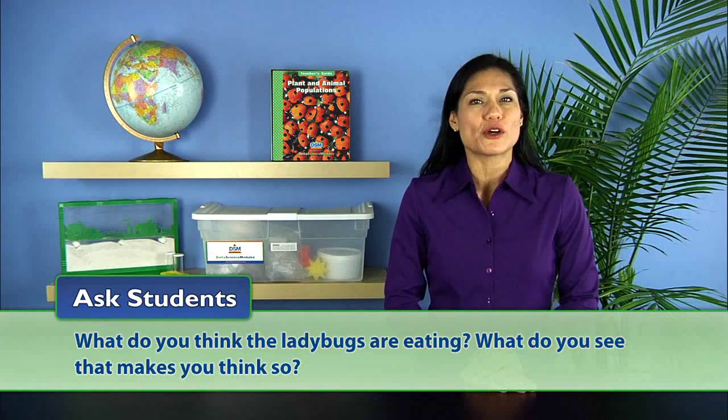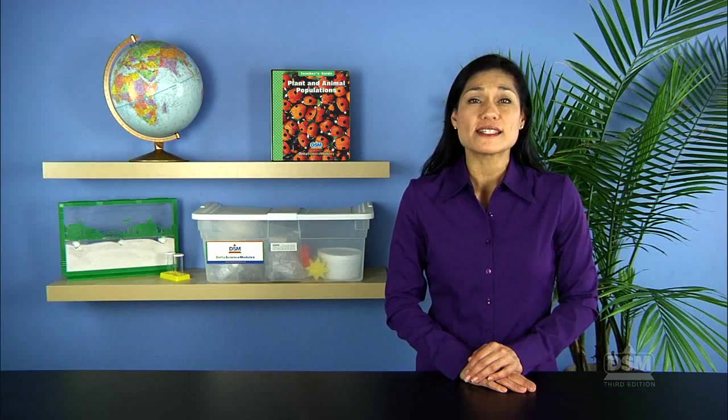Since there are fewer aphids left in the containers, students should realize that the ladybugs are eating the aphids. Next, explain that a predator is an animal that eats another animal and the prey is the animal that is eaten.